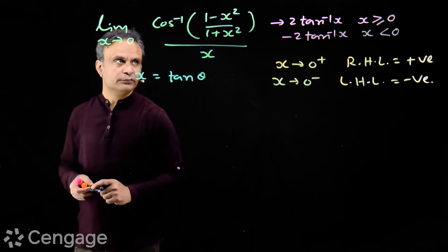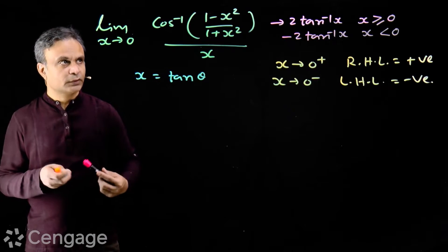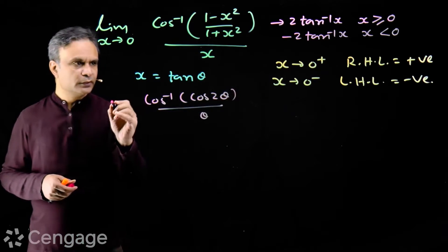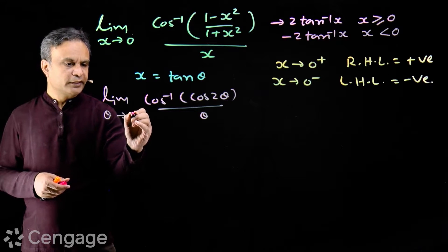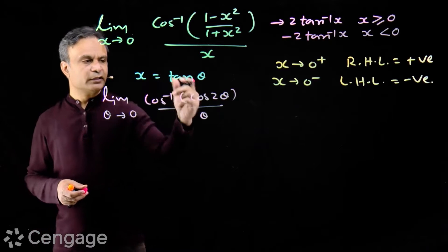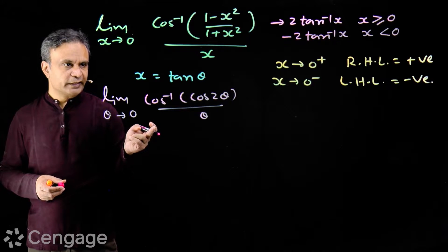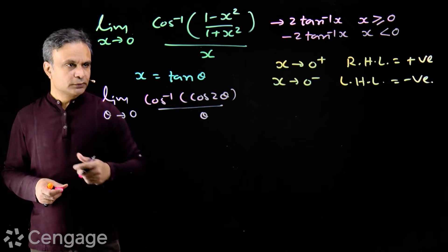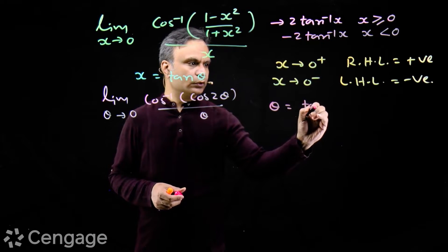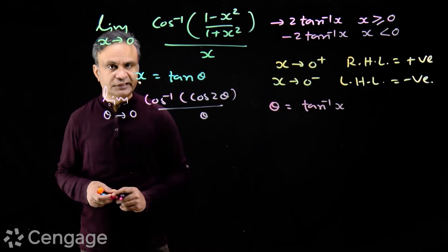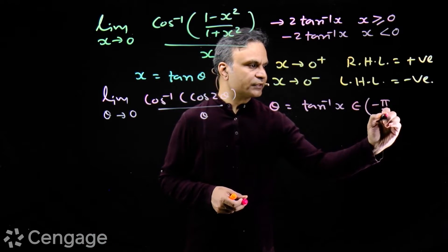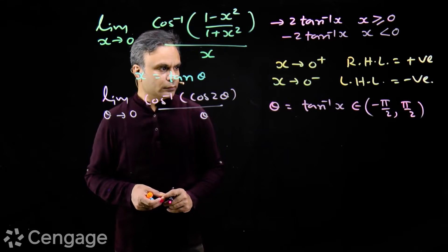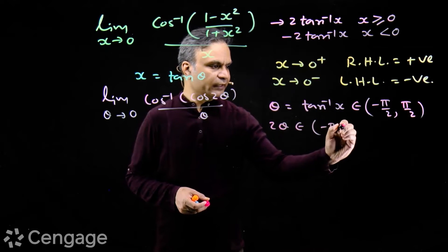So we get cos⁻¹(cos 2θ) / θ where θ tends to zero, because when x tends to zero, tan θ tends to zero — tan θ is continuous on (−π/2, π/2). So when x approaches zero, θ also approaches zero. Now θ = tan⁻¹x, and the principal values of tan⁻¹x lie in the open interval (−π/2, π/2), so 2θ belongs to the open interval (−π, π).